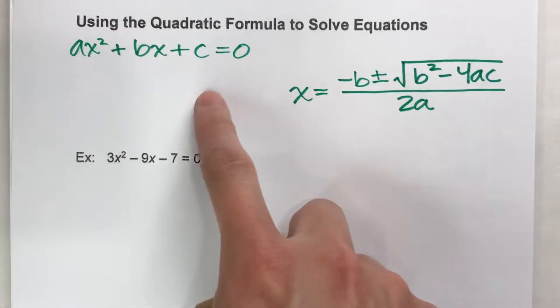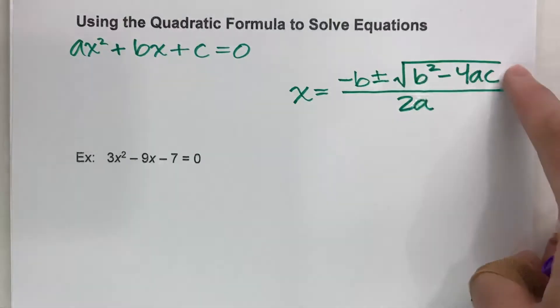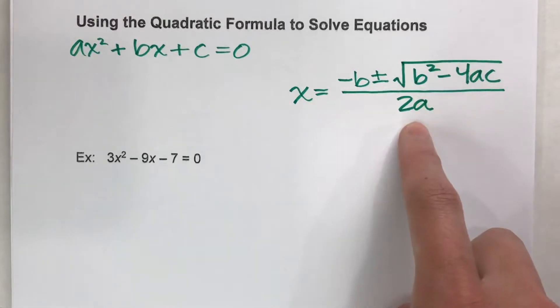Because when it's in this form, the quadratic formula says that x is equal to negative b plus or minus the square root of b squared minus 4 times a times c all divided by 2a.